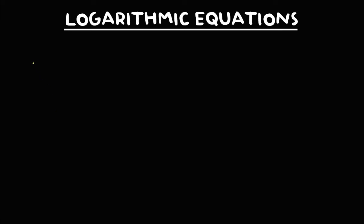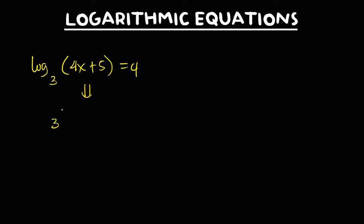For this given, we have log (4x + 5) with base 3 equals 4. First, we need to convert this logarithm in exponential form. So that's 3 to the power 4 equals 4x plus 5.